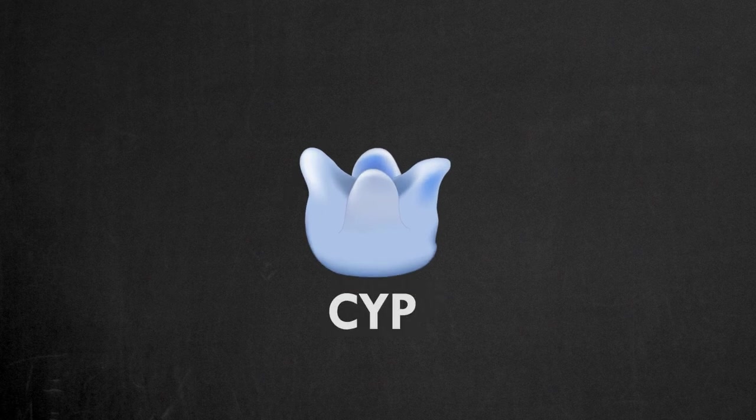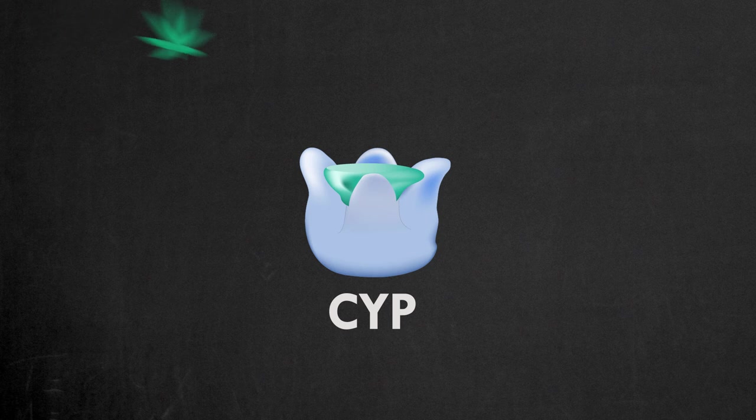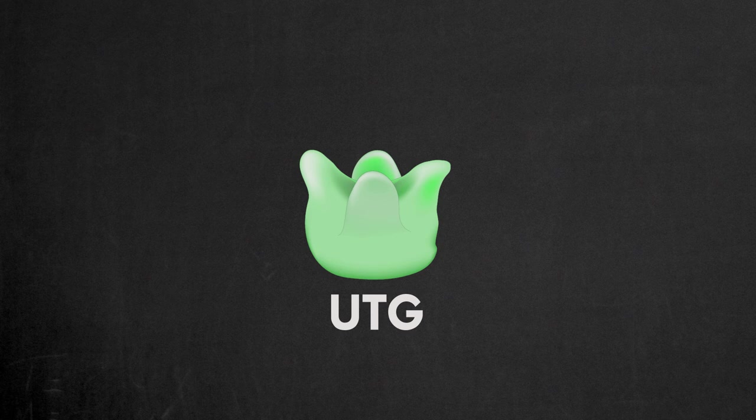Inhibit the activity of CYP enzymes. This will slow the metabolism of the THC. Inhibit the activity of UTG enzymes. This will reduce the excretion of the THC through the urine.